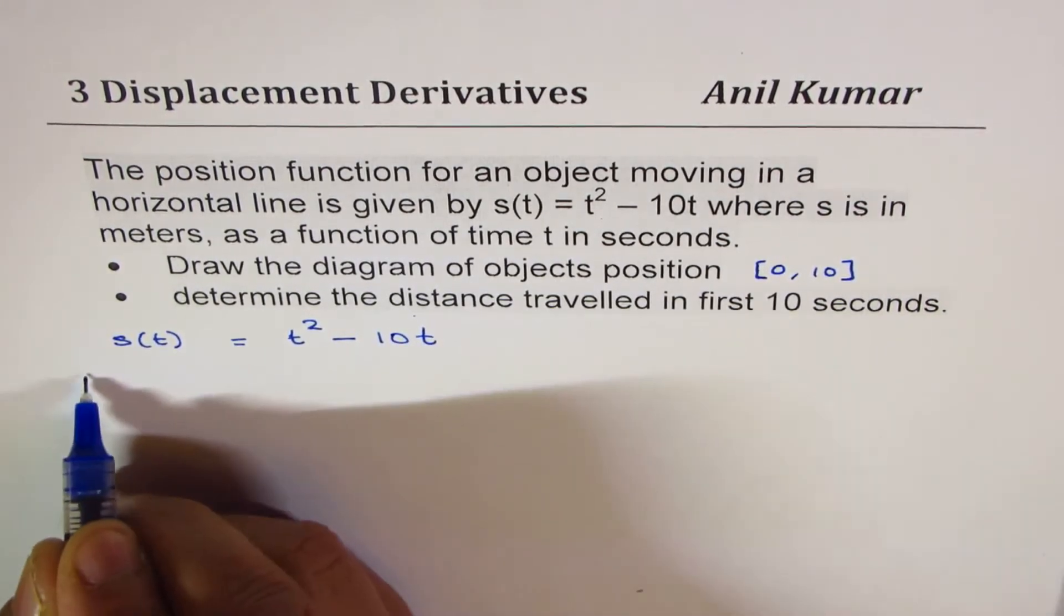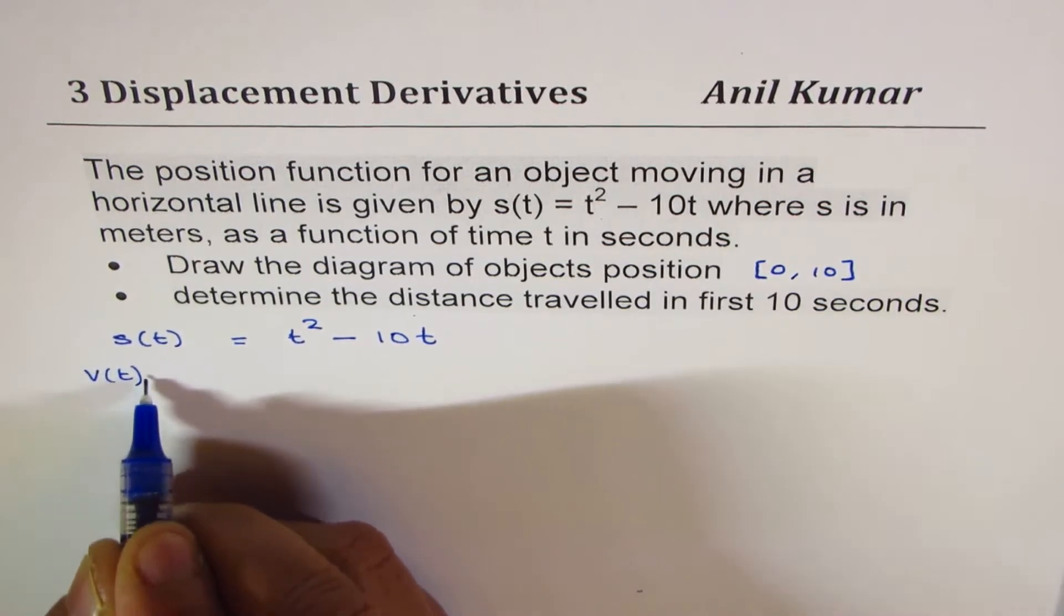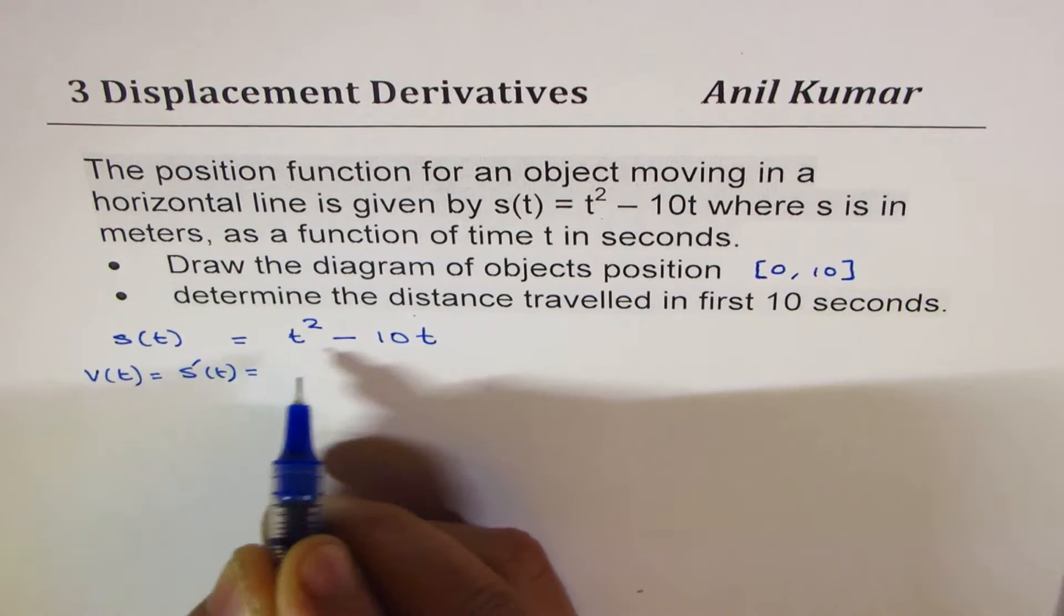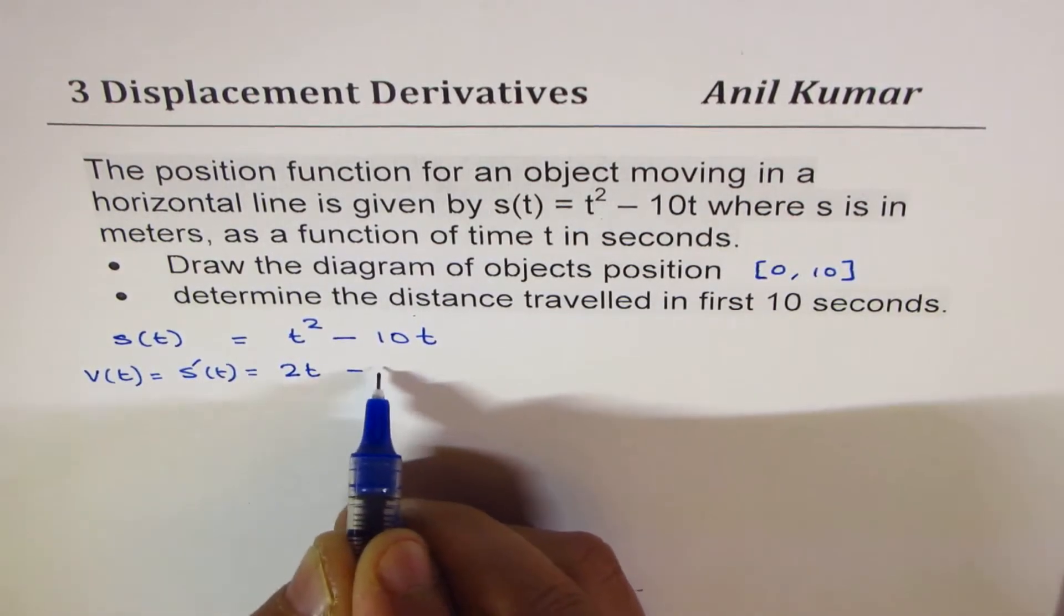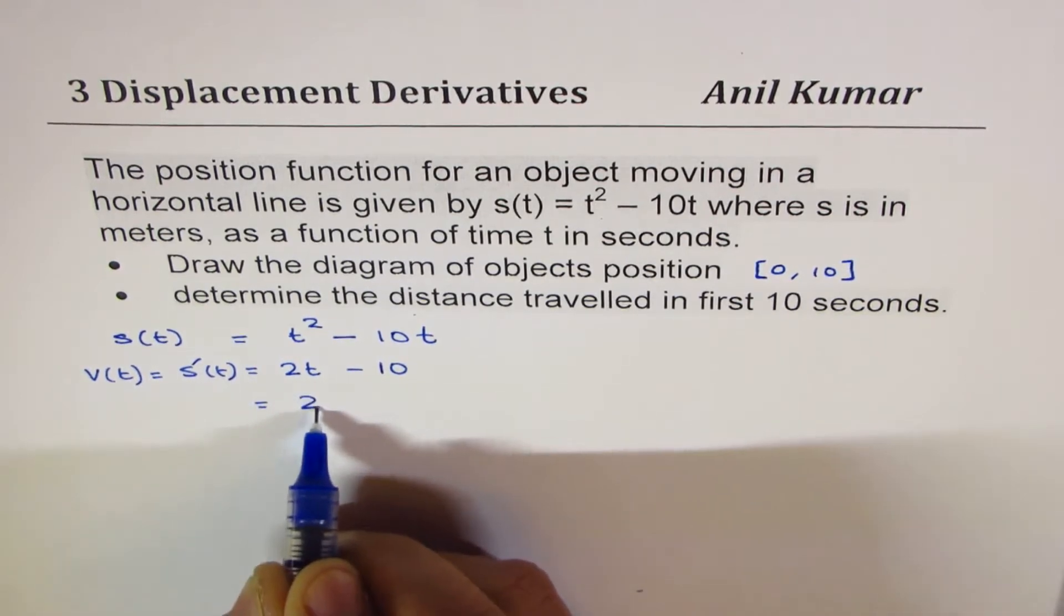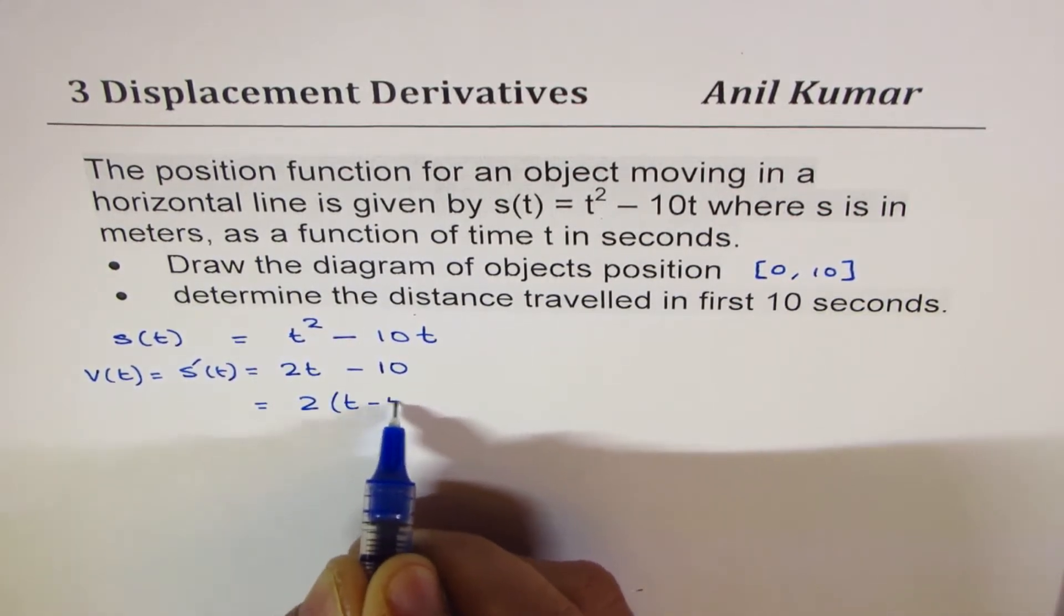Let us find the velocity function also, which as you know is equal to the derivative of the position. So it comes to 2t minus 10. If you factor, you get 2 times t minus 5.